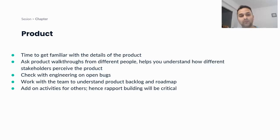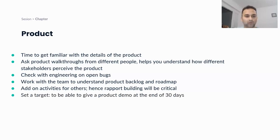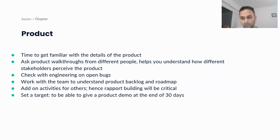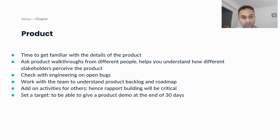Since stakeholders are dedicating precious time to these add-on activities for you, the rapport you're building plays a critical role. Set a target to be able to give a product demo yourself by the end of the 30 days. Combining people and product: one of the most important stakeholders you have is your customer and user. Try to talk to a few customers — maybe join calls as a spectator first, and as you get the hang of the product, engage more directly.